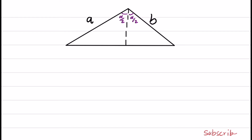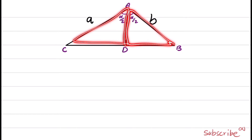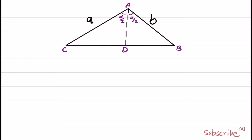To solve the question, I first name the corners of this triangle as A, B, C, and D. And I'm going to apply the law of cosines to these two triangles, 1 and 2.